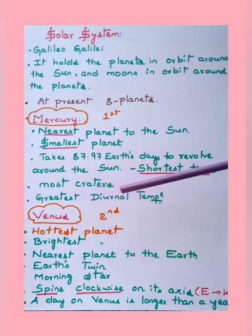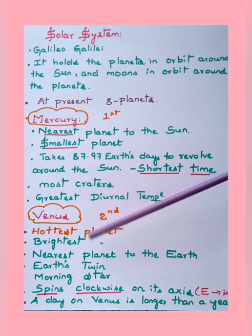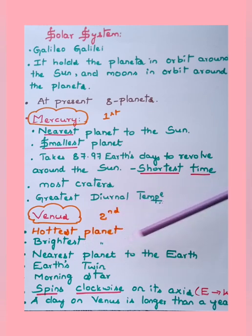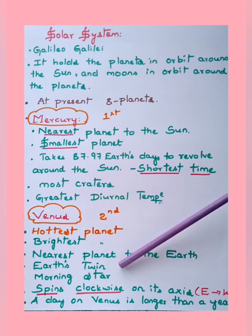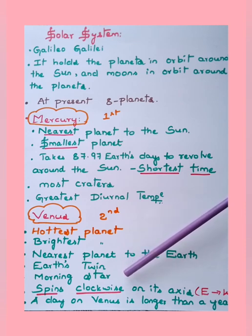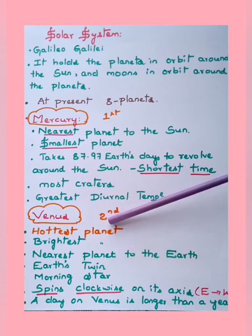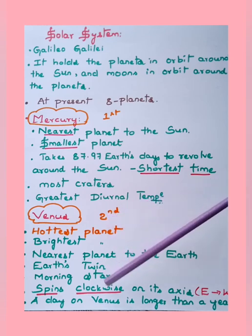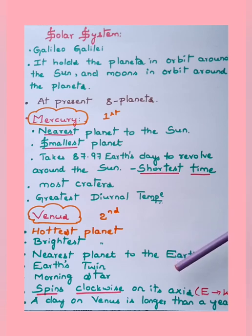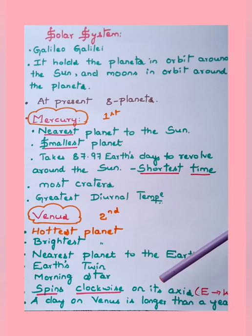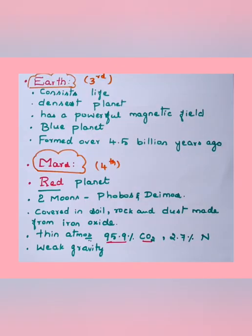Venus is the second planet in the solar system. It is the hottest and brightest planet, and the nearest planet to the earth. It is also called Earth's twin because in size and mass it is almost like the earth. It is called morning star. Venus spins clockwise on its axis — from east to west — whereas all other planets move from west to east. A day on Venus is longer than a year on earth.